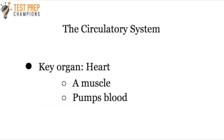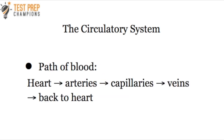The key organ of the circulatory system is the heart. Your heart is muscle, and it pumps blood through the vessels in your circulatory system. You can strengthen your heart by exercising — particularly doing cardiovascular exercise like running, walking, riding a bike, or using an elliptical machine.